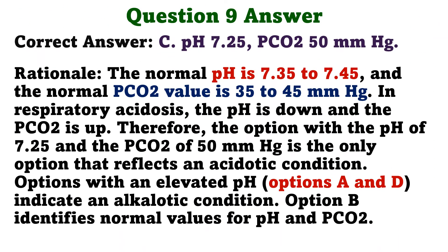The correct answer is C: pH 7.25, PCO2 50mm of mercury. Rationale: The normal pH is 7.35 to 7.45, and the normal PCO2 value is 35 to 45mm of mercury. In respiratory acidosis, the pH is down and the PCO2 is up. Therefore, the option with the pH of 7.25 and PCO2 of 50mm of mercury is the only option that reflects an acidotic condition. Options with an elevated pH indicate an alkalotic condition. Option B identifies normal values for pH and PCO2.